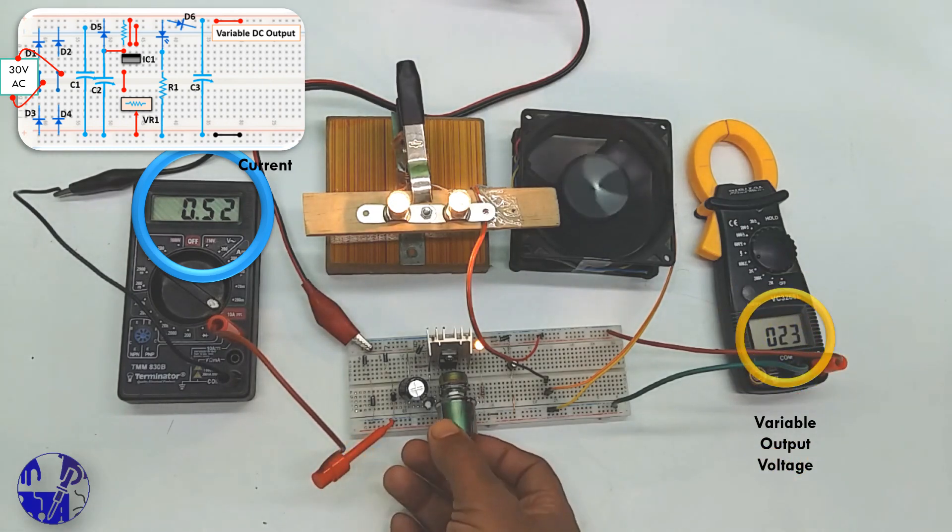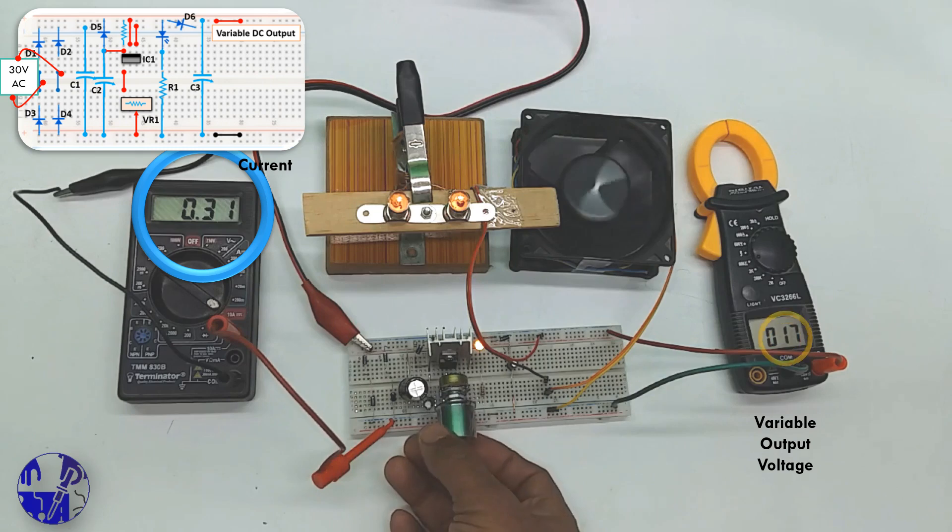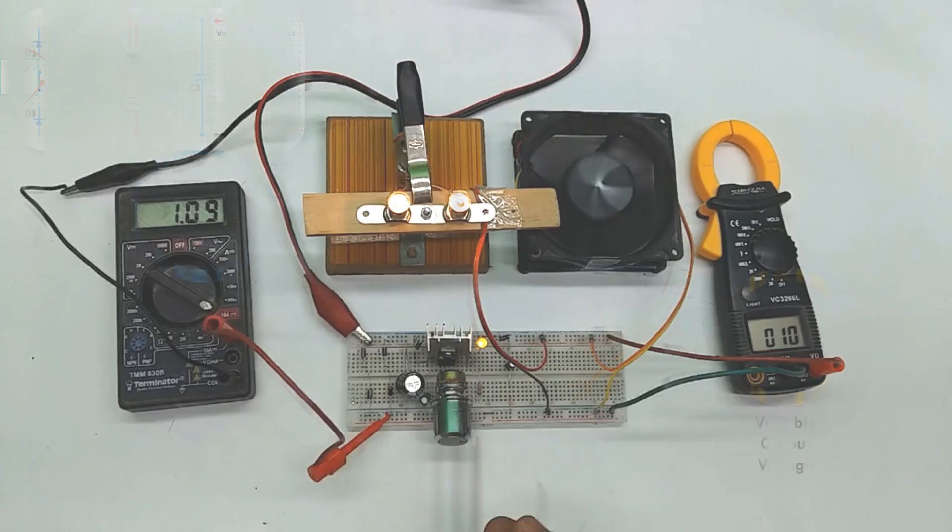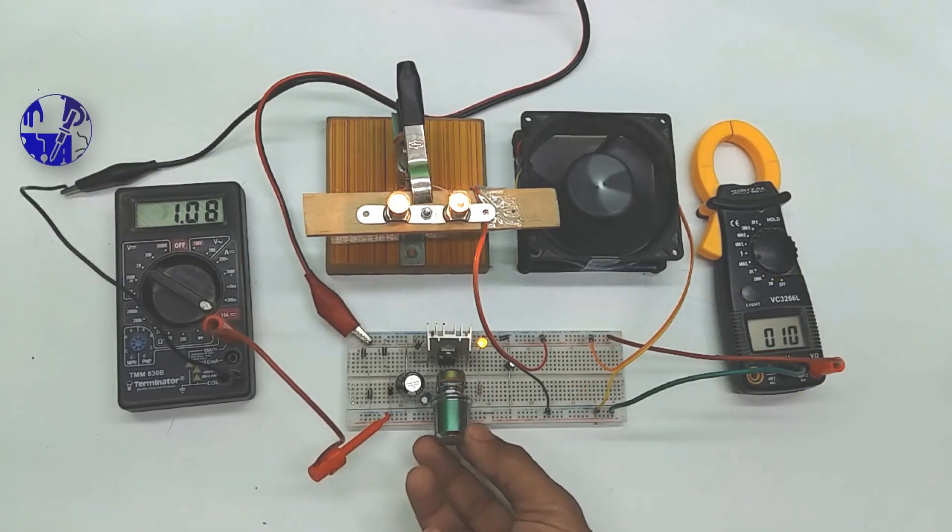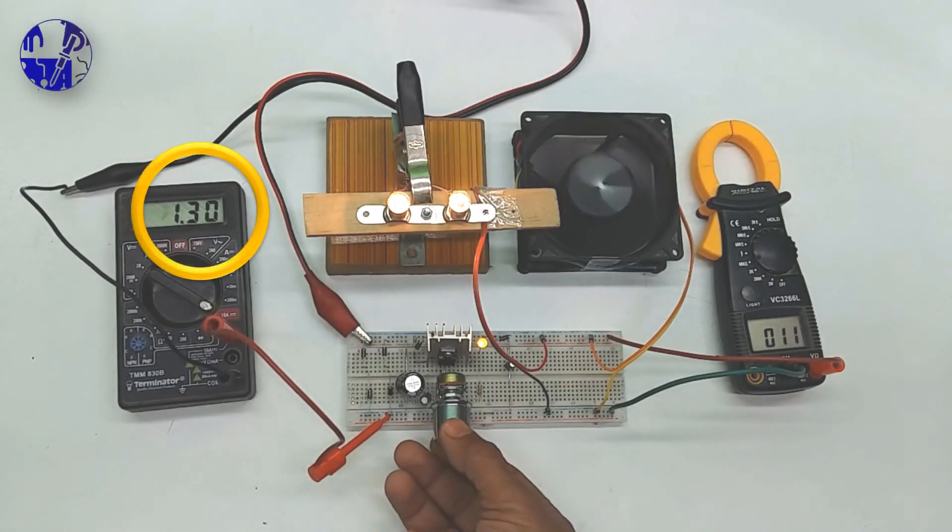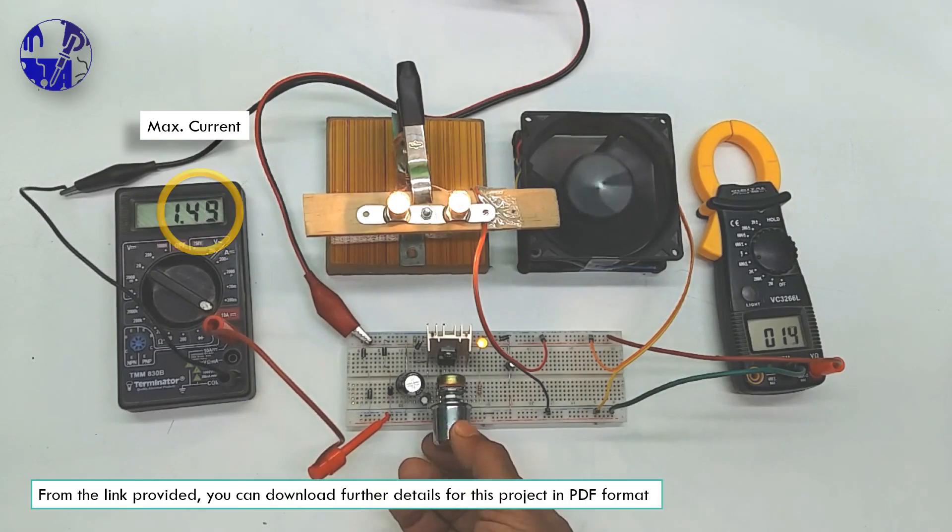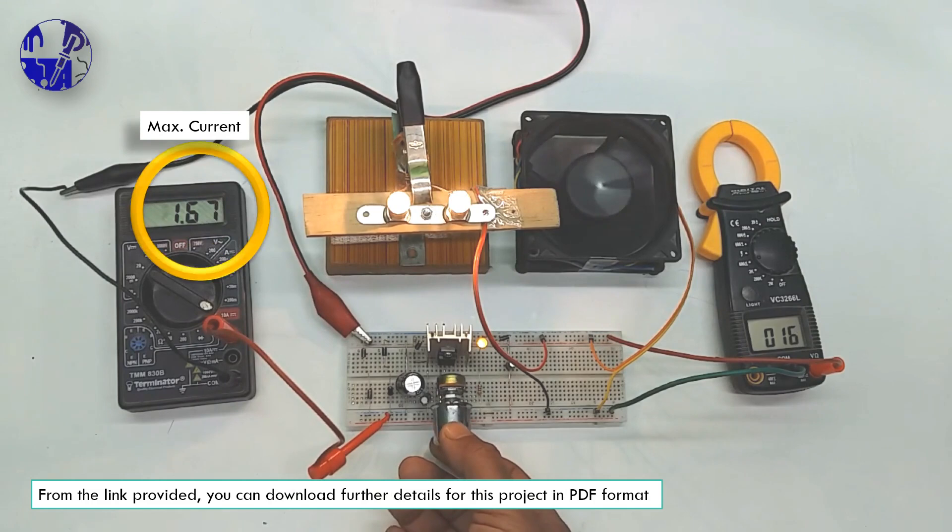The three-terminal IC LM317 can take an input voltage of 3 to 40 volt DC and provide a fixed output voltage of 1.25 to 37 volt. You can put maximum load current of up to 1.5 ampere.